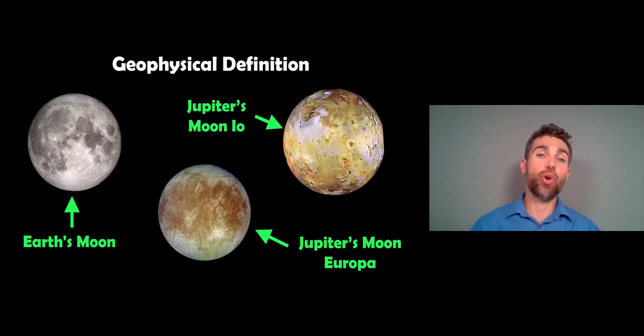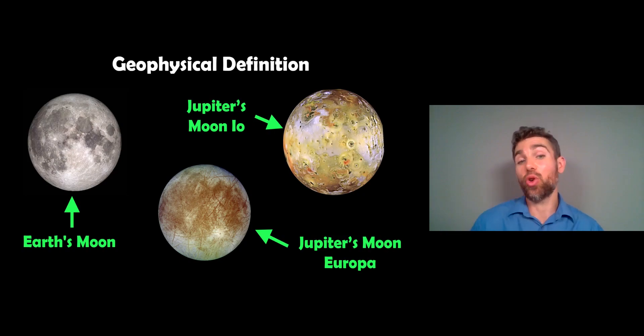But if you just purely want to go for the geophysical definition, the composition and the actual objects themselves, then a lot of other objects in the solar system then become or could be classified as a terrestrial planet when in reality they're not necessarily. So things like the Moon, some of Jupiter's moons even, could be classified as terrestrial planets because they meet that geophysical definition of being a terrestrial planet.